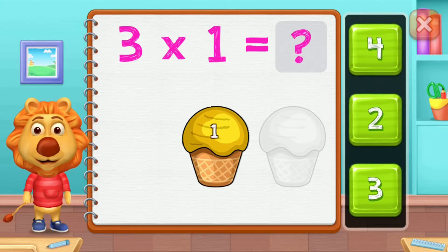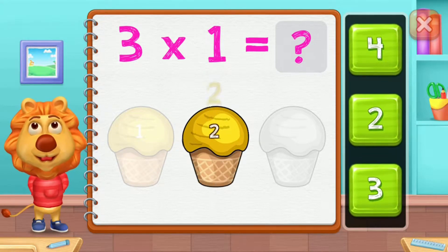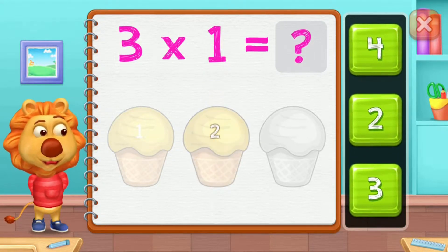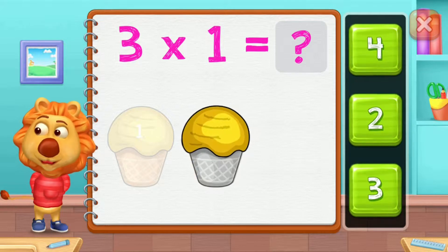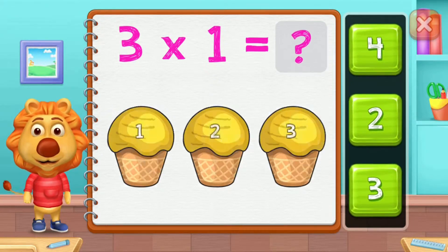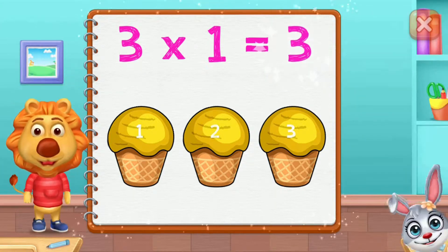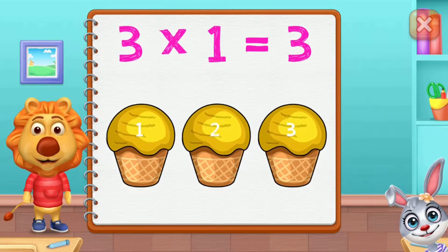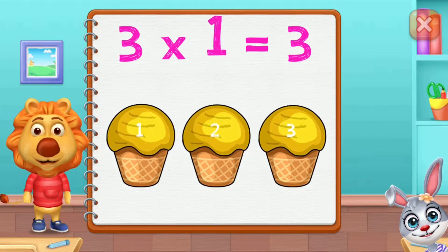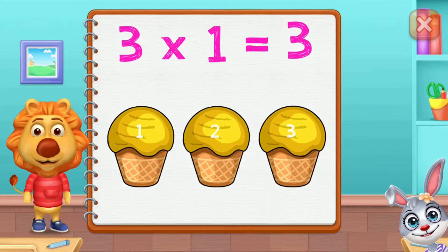1, 2, 3, 4, 5, 6, 7, 8, 9, 10. Three groups of one equals three.